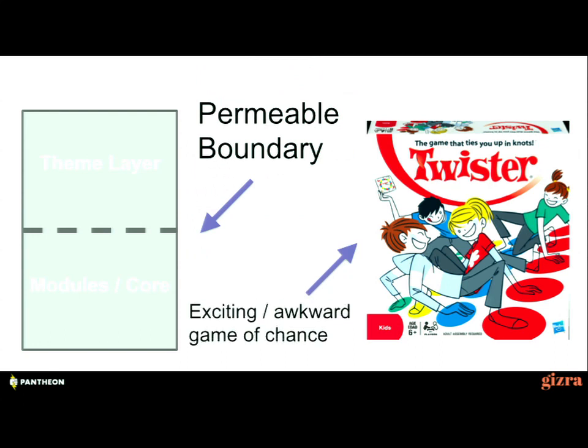When you have a permeable boundary, you end up with an exciting and awkward game of chance as to what will happen. It's quite often that when you develop a Drupal site, like a game of Twister, you'll find your head is near your own rear end.